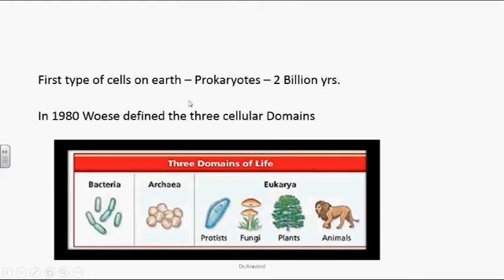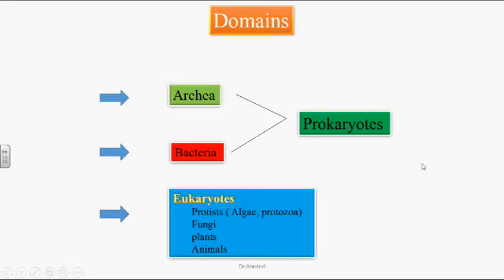To classify the cells on earth, in 1980, Woese defined three cellular domains: one as Bacteria, another as Archaea, and the third as Eukarya or Eukaryotes. Archaea and Bacteria are both prokaryotes. In Eukaryotes we have protists — examples include algae, protozoa, and fungi. Many fungi are beneficial to humans, and very few are pathogenic. The three domains are Archaea, Bacteria, and Eukaryotes.